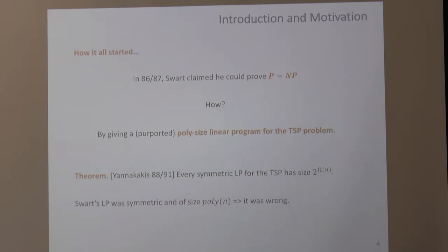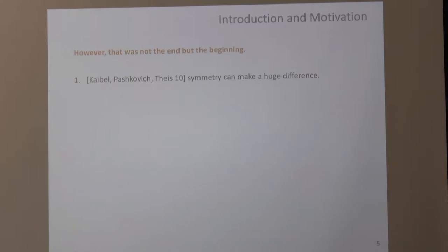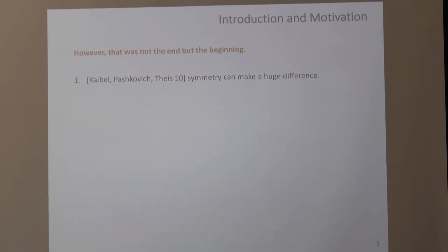That could have ended the story, but it actually started it. People tried for a long time to remove the symmetry assumption, believing it shouldn't make a big difference. They failed and eventually gave up. Then a very nice 2010 paper by Kaibel, Pashkovich, and Theis showed that symmetry can actually make a huge difference. They looked at the L-matching problem — matchings of size L, related to Yannakakis's original proof on the matching polytope. They showed that for L roughly of order log N, there is a small asymmetric extended formulation of polynomial size, but every symmetric extended formulation must be superpolynomial.